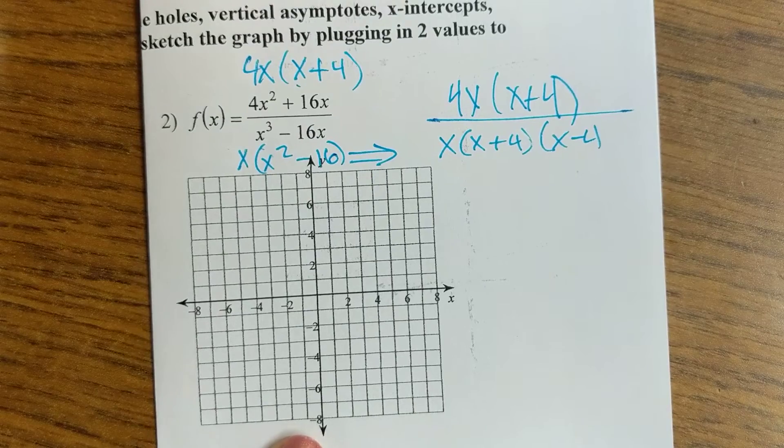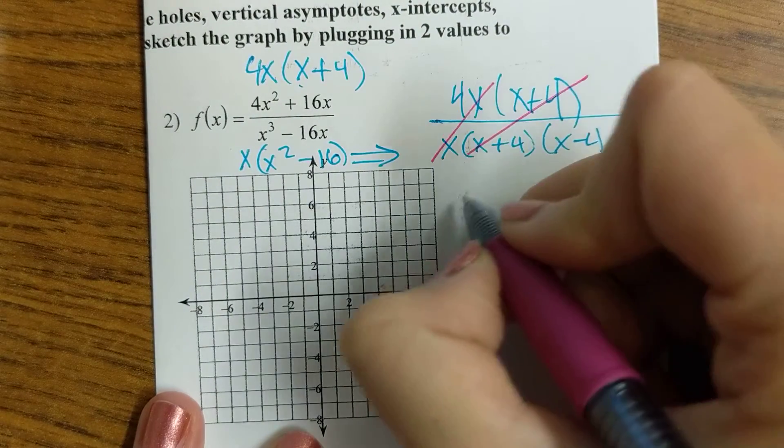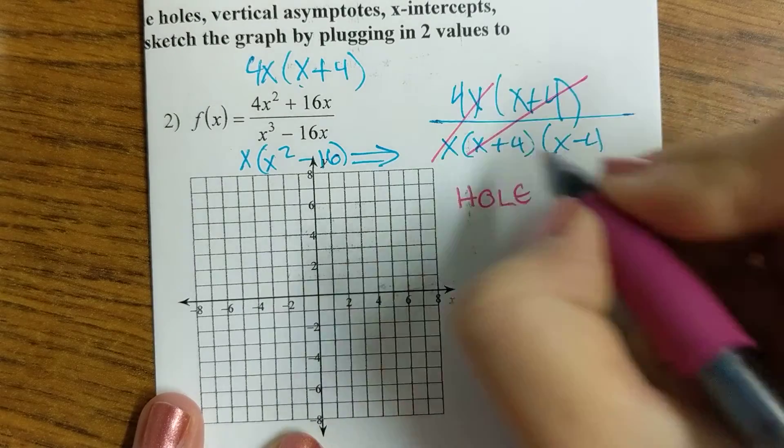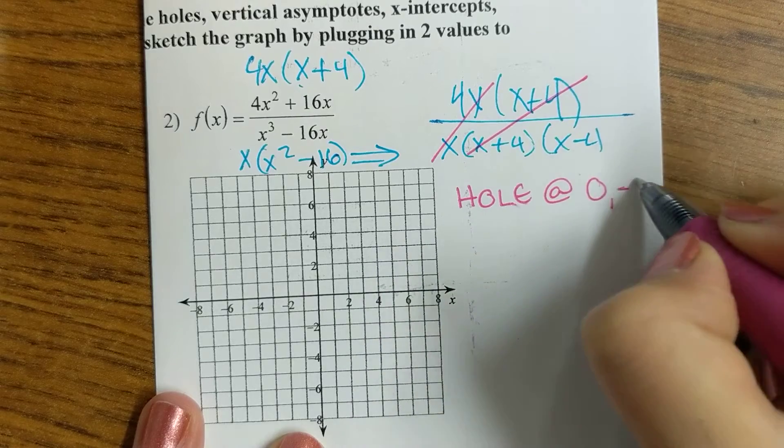Okay, so you see that two things are going to reduce to one here? That means we're going to have two holes: a hole at 0, because x over x would be at 0, and a hole at negative 4.